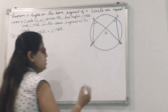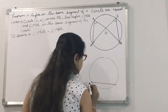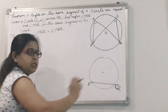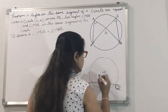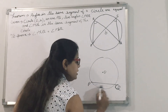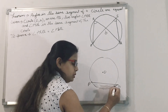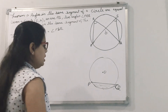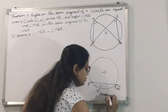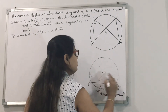First, let me clear one thing — what is a segment? This is a circle with center O and PQ is the chord. The area bounded by this chord and the arc PQ is the segment. This is the minor segment, and this is the major segment.